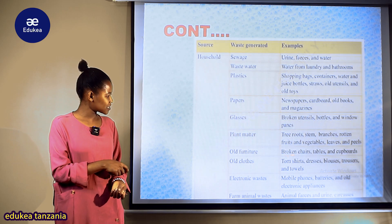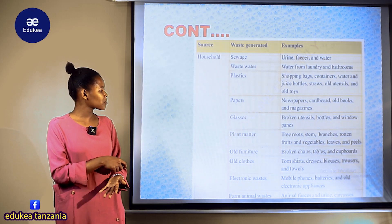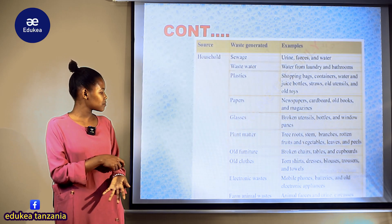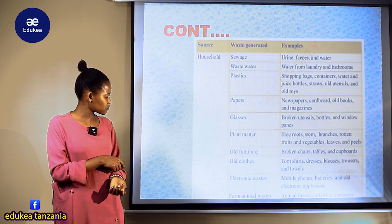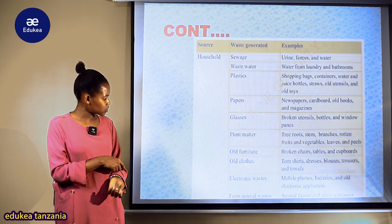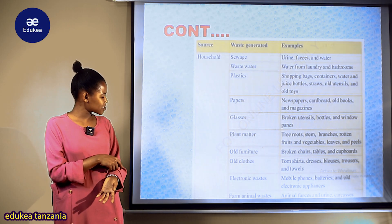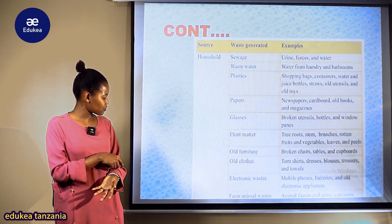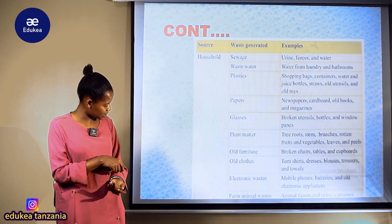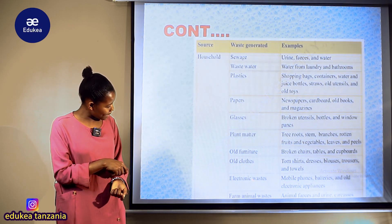Pia tuna old furnitures — mfano broken chairs, tables, and so forth. Old clothes — tuna materials kama mashati, ties, magauni, ambayo yameharibika tunatupa.